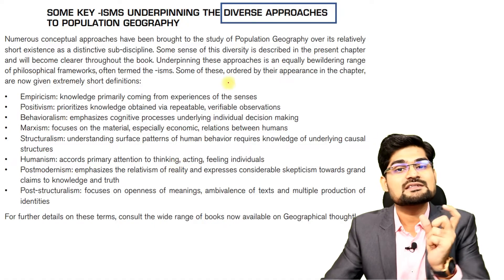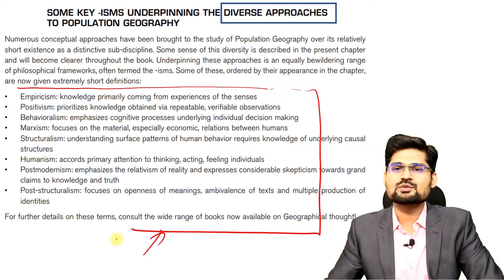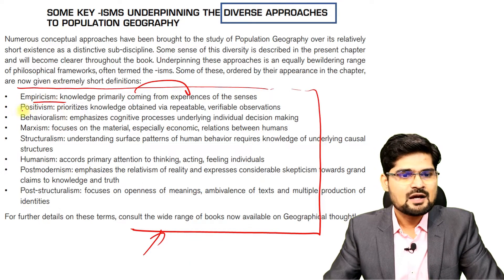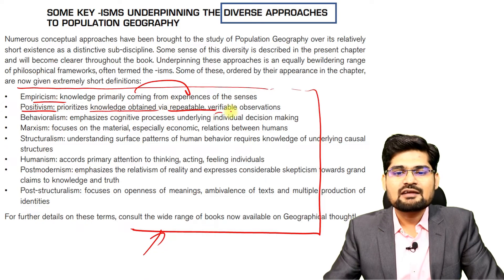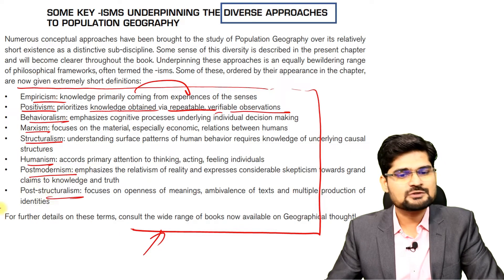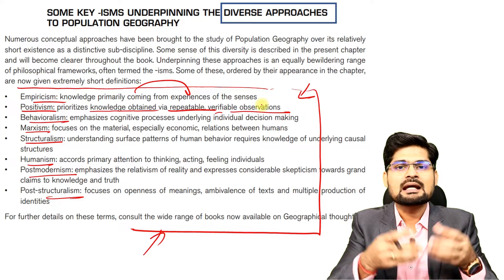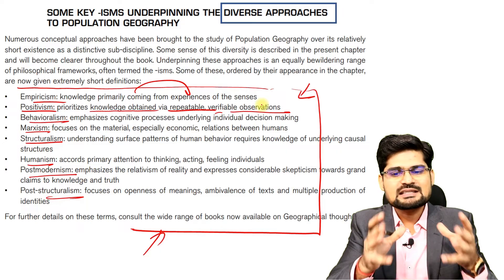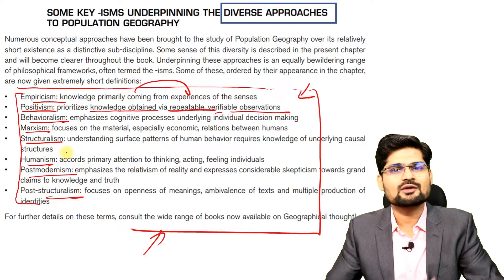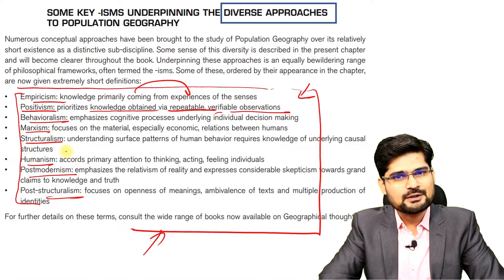There were diverse approaches that developed over time. Key approaches or 'isms' under population geography include empiricism — primarily coming from experiences — positivism, which prioritizes knowledge through repeatable and verifiable scientific observations, and then behavioral, Marxist, structuralist, humanist, postmodernist, and poststructuralist approaches. All these came as important approaches in population geography and the study of population as a spatial phenomenon. We already have a huge playlist in geographical thought — you can go there and watch how each influenced geography.